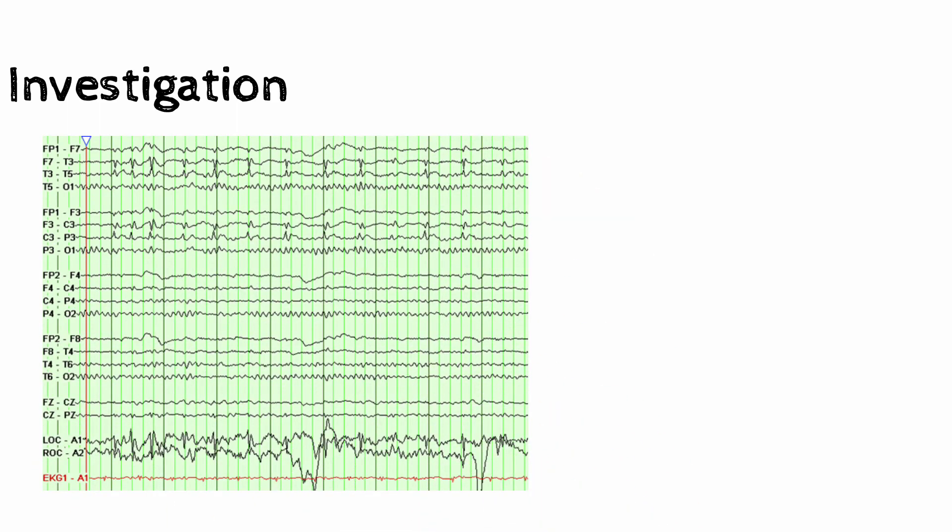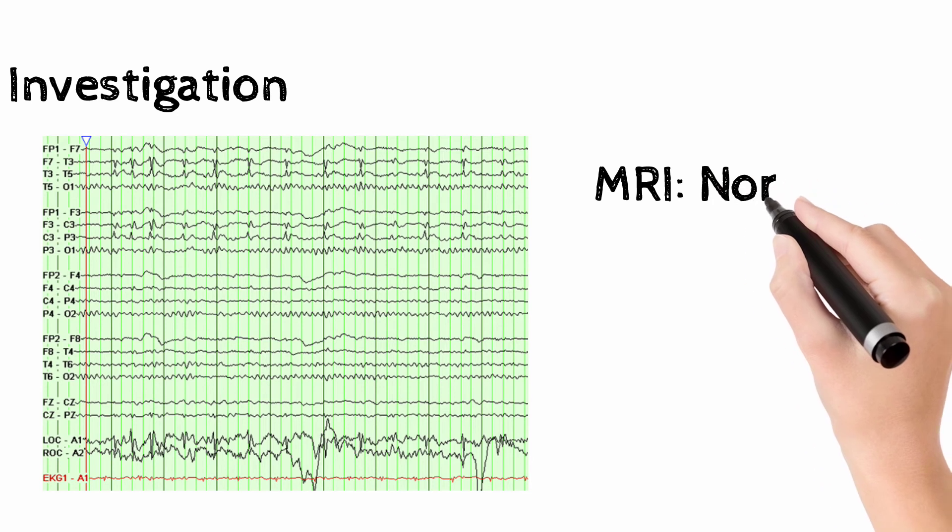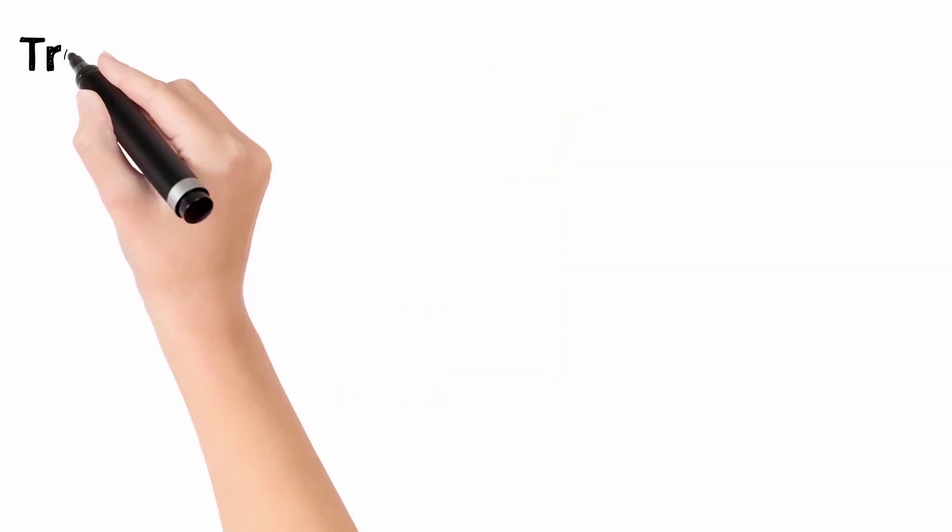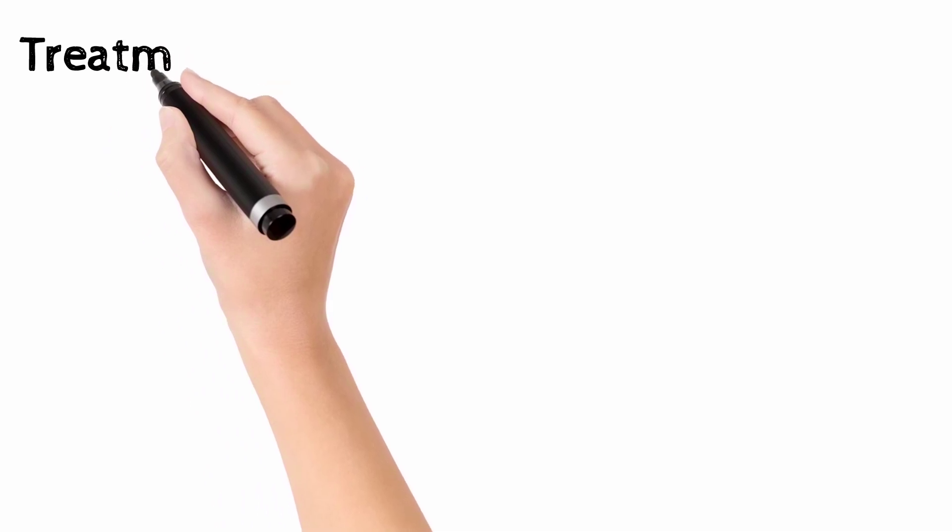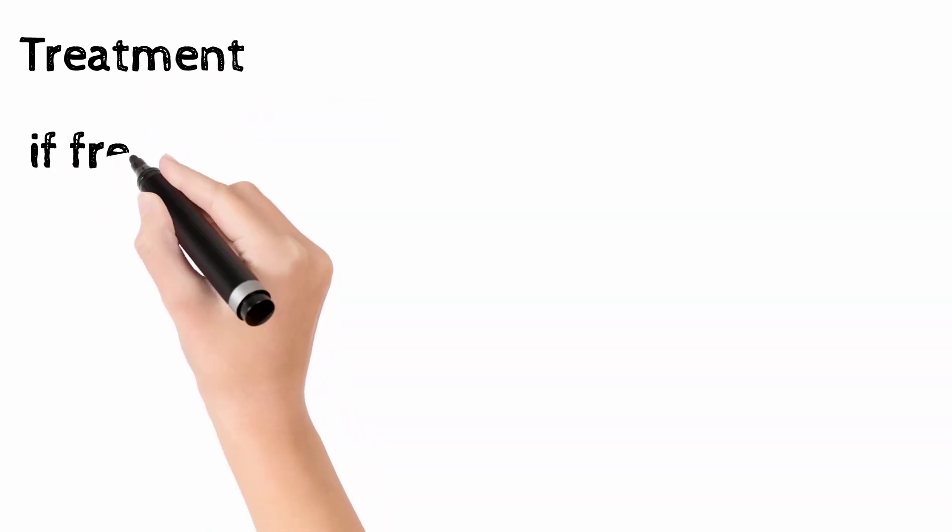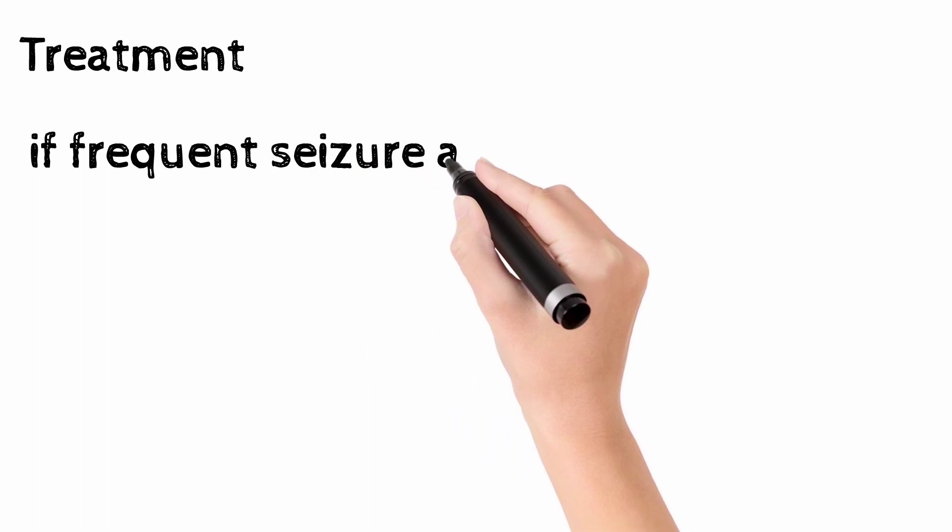On EEG you can see epileptiform discharge from the central leads, which is why it's called centrotemporal spikes. The MRI is usually normal.